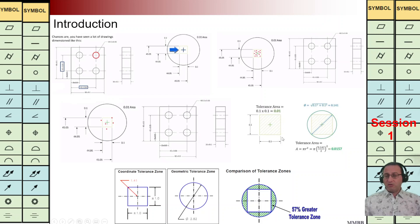If we are going to calculate the area of the box and area of the circle and then we are going to divide these two areas to each other, we can see the area of geometric tolerance zone is 57% greater than the area of coordinate tolerance zone. It means we don't need to have that much accurate machinery. We are going to cover more area, more points.